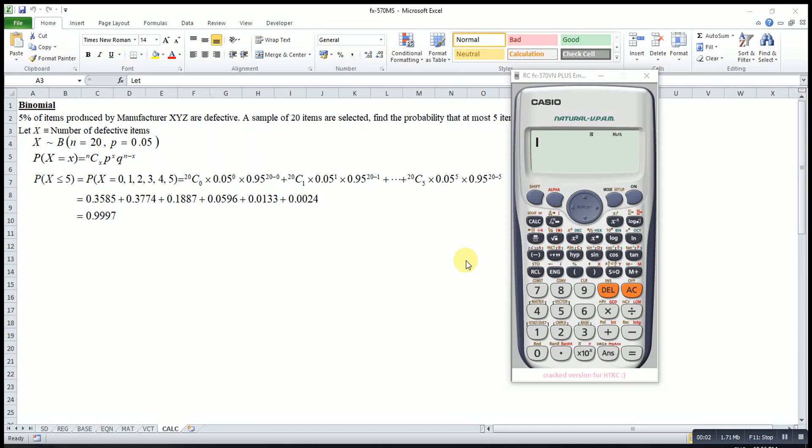Other than the table function, we also can make use of the calculate function. First we form a function in terms of X. For binomial distribution, 20 C X times 0.05 to the power of X,